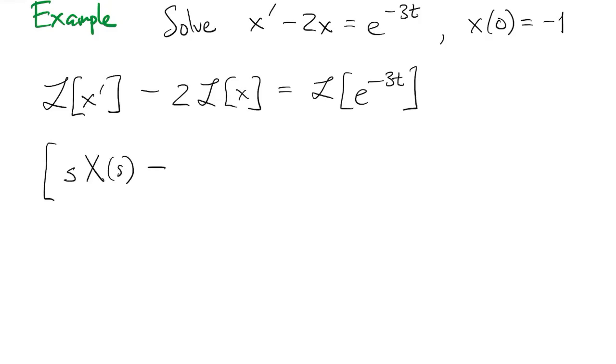So the first term gives us s times capital X of s minus x at zero. Second term just gives us negative 2 capital X of s. And the right hand side gives us 1 over s plus 3. That's s minus negative 3.